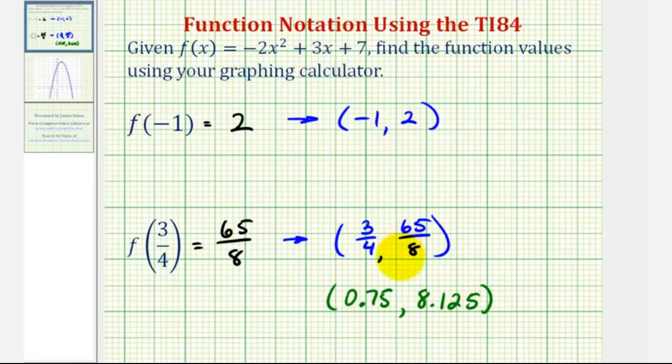Let's go ahead and verify that these two points are on the given function. Notice how the function is a quadratic function. So the graph is a parabola. And since a is negative, the parabola opens down.